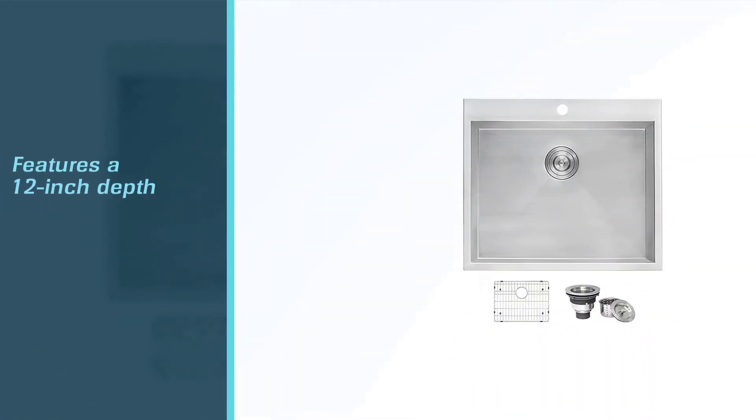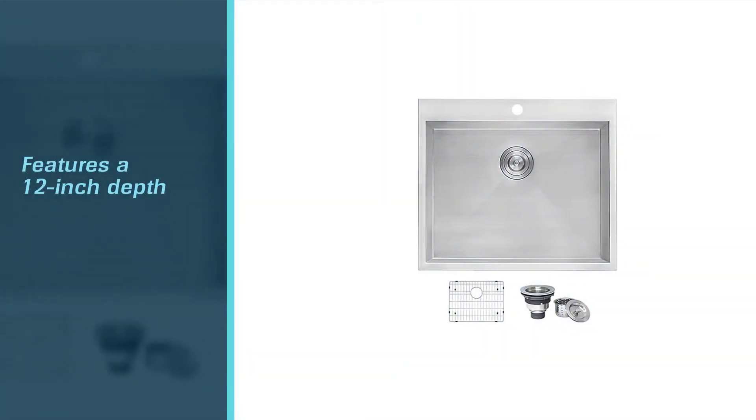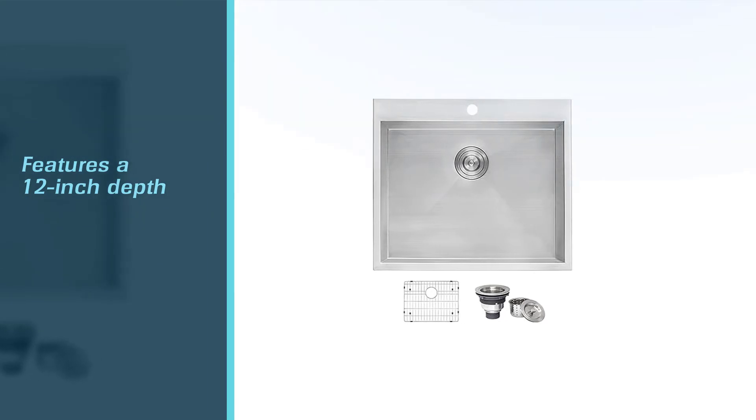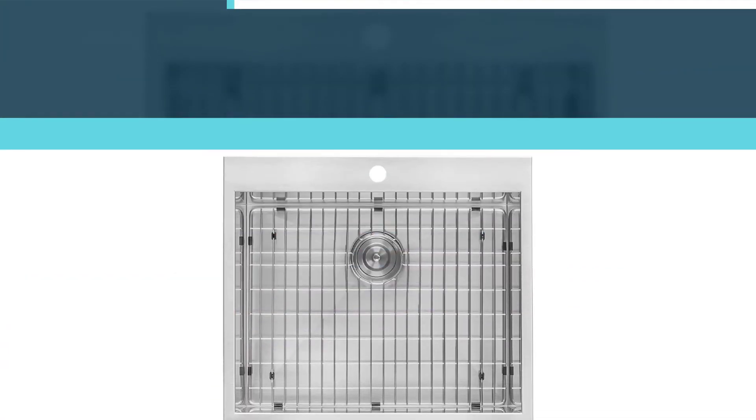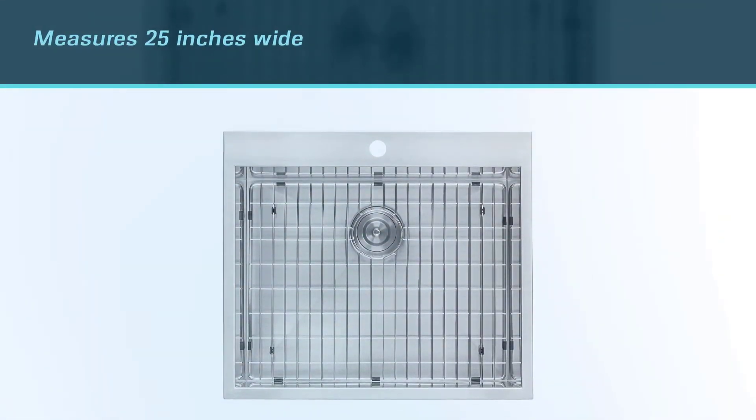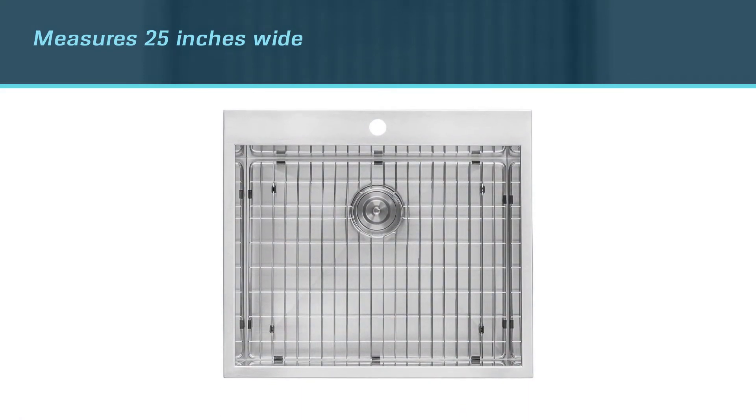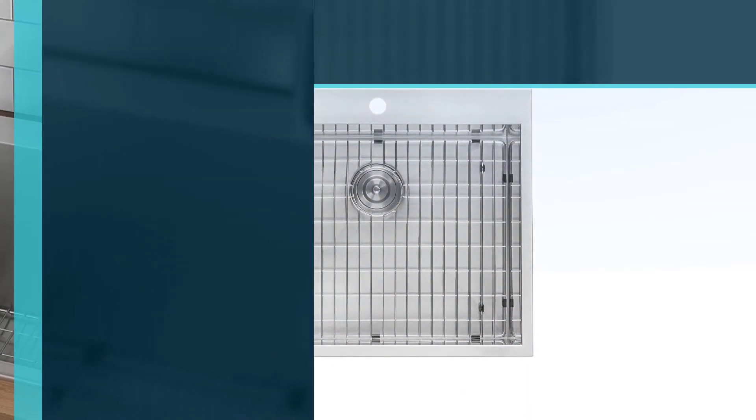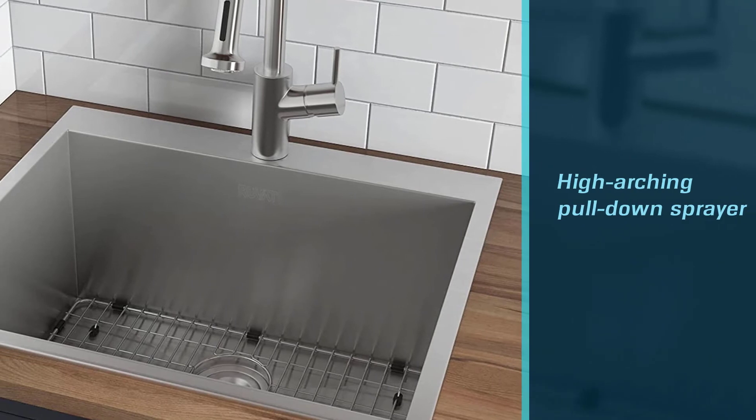That's not the case with this model from Rivetti, which features a 12-inch depth, measures 23 inches wide, and 22 inches from front to back. With the basin's boxy shape and a high-arching pull-down sprayer, this utility sink is large enough to clean tools or even fill a tall bucket.